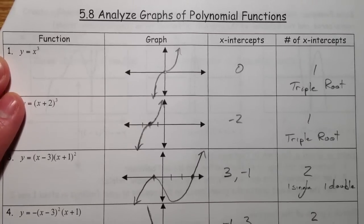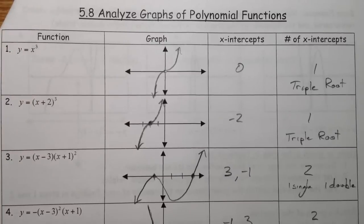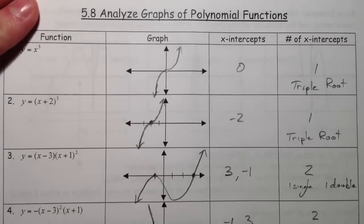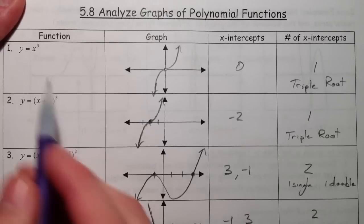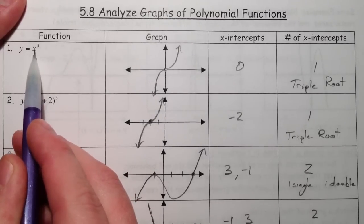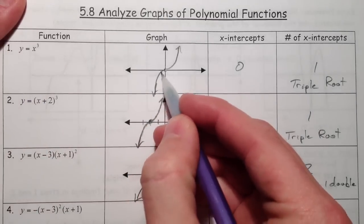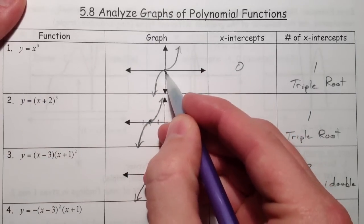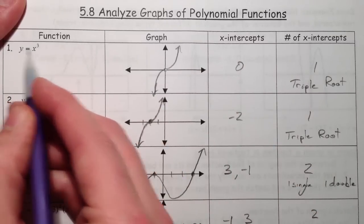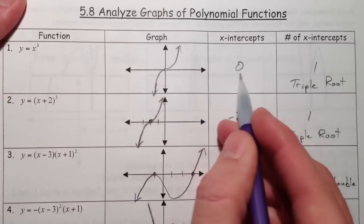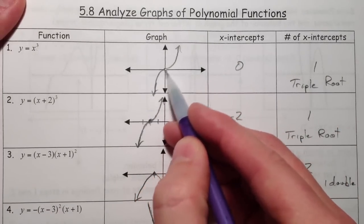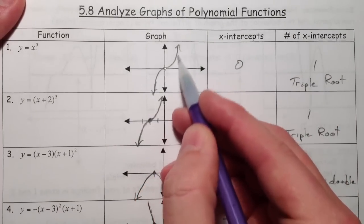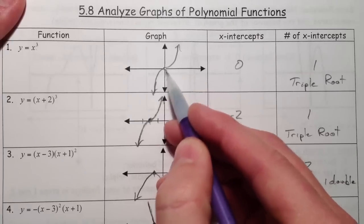So now we're going to talk about the graphs of polynomials, and we're going to talk about them in factored form. In factored form you can see x cubed, which you may have seen before. It crosses at zero because when you set y equal to zero, x has to equal zero. We call this a triple root, so it does this little squiggly slowdown thing.